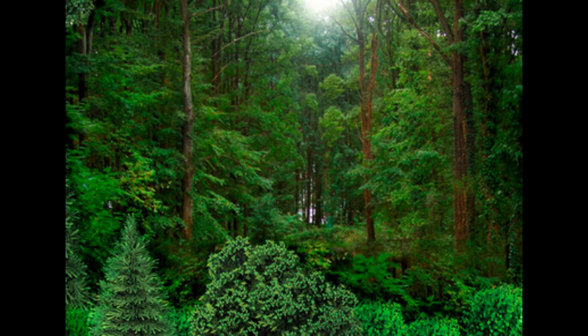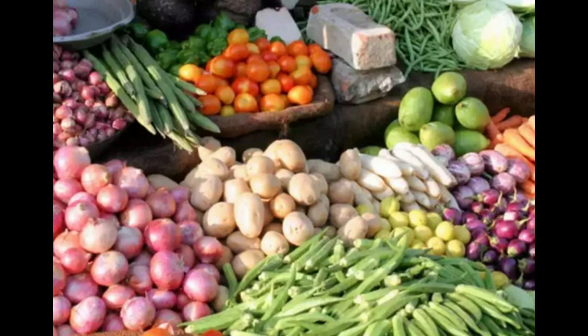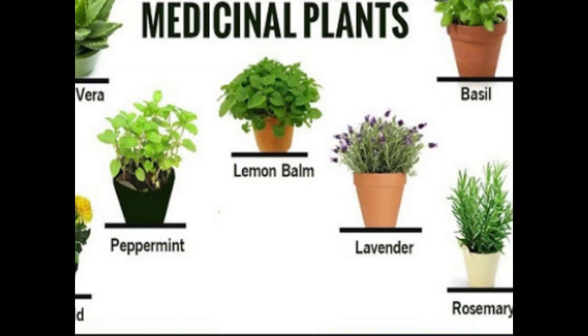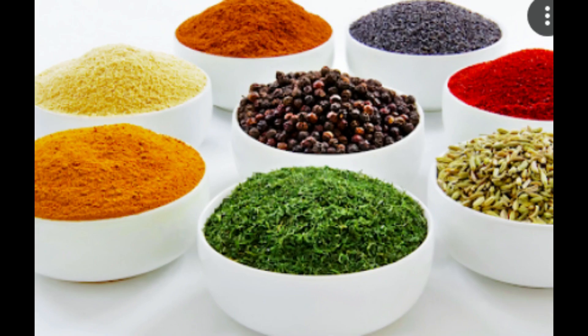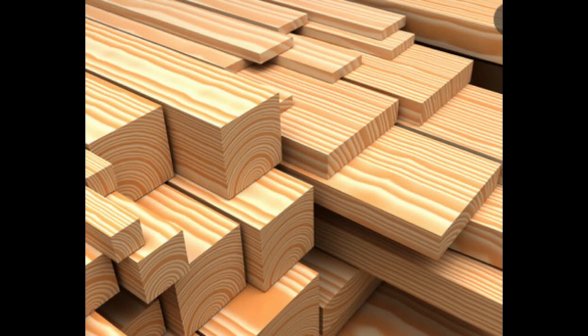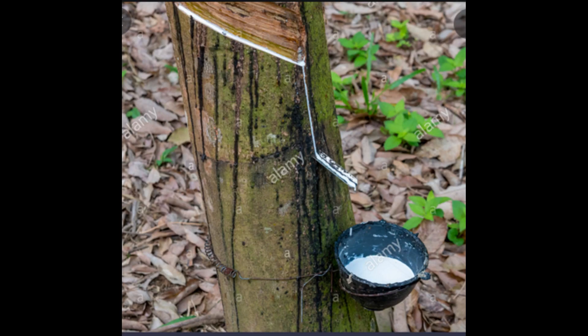First of all, we studied that all the plants in our surroundings are useful to us in different ways. Plants are used as food, as medicine, as spices, and for industrial purposes like timber — wood used for making furniture — and latex like rubber latex.